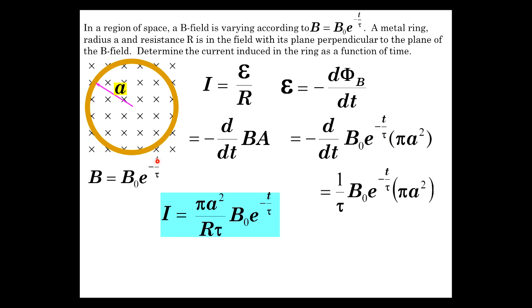Well, as T gets bigger, this thing gets smaller. Therefore, the induced current is going to be produced in such a way that it tries to maintain that original flux.